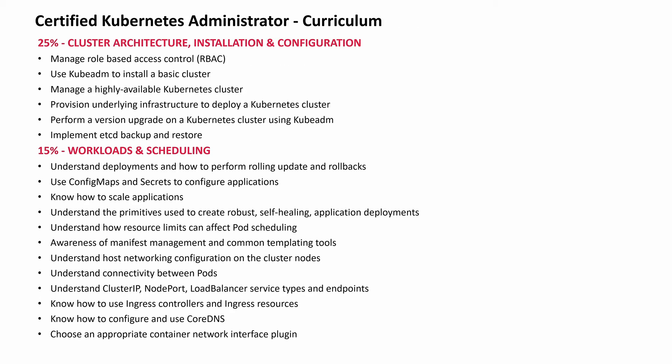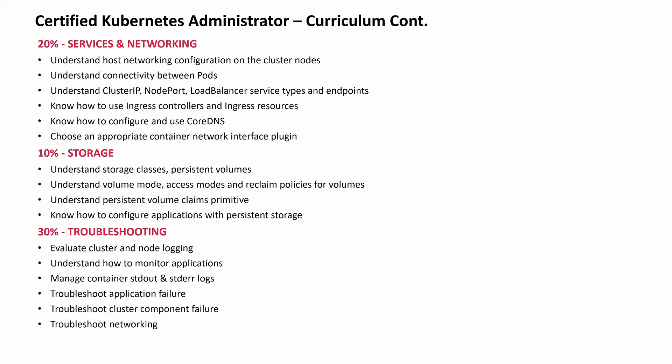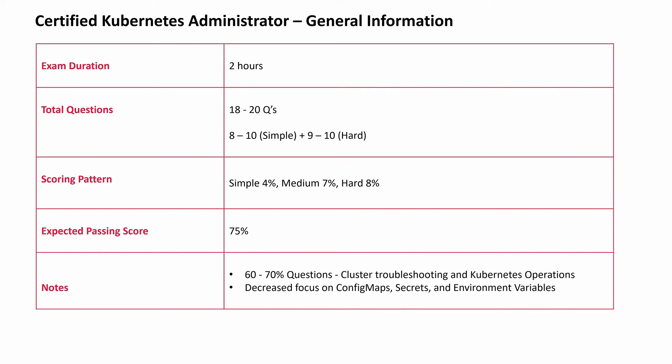Looking at the percentages: 25 plus 15 is 40%, and 20 and 10 is 30, making 70%. In the 70% section, you have to get 70% out of 70%, then practice troubleshooting. When you do that, your passing chances will increase. This is the general information for the new exam from September 1st. I suggest you book the exam after September 10th — don't go immediately, as they may have bugs or struggle to establish the new exam online. Wait 10 days.